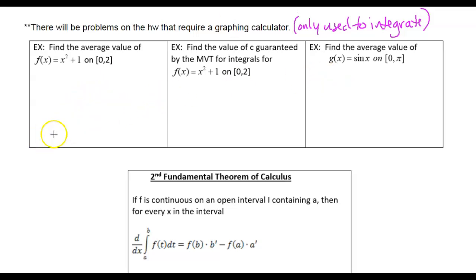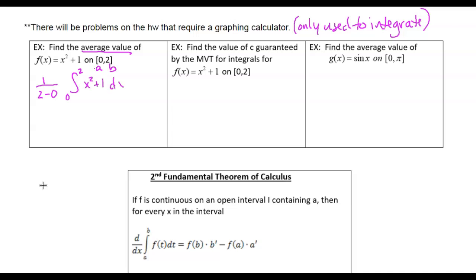Lesson number one, example one: find the average value for our function on [0, 2]. Remember, those are A and B. So we want to set this up as one over b minus a, the integral from A to B of our function dx. If this was a more complicated function and a free response question, you need to show this formula for one point, and then type that into your calculator to get the second point. We can integrate this by hand, so I'll do it both ways on this one problem.